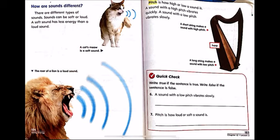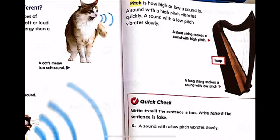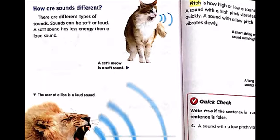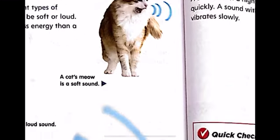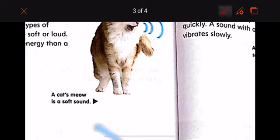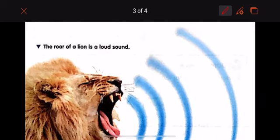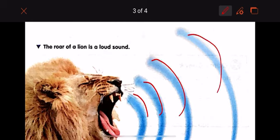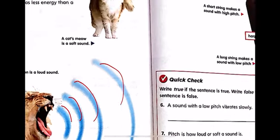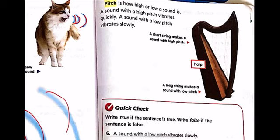How are sounds different? Sounds can be soft or loud. A soft sound has less energy than a loud sound — like the cat's meow, which is a soft sound. Look at the vibrating; it is soft. What about the roar of the lion? That is a loud sound. Sounds can be soft or loud.